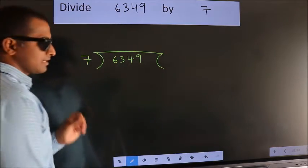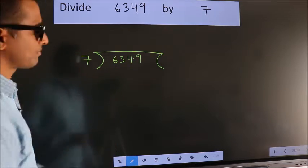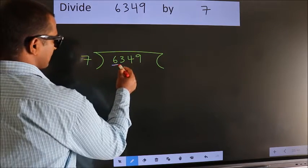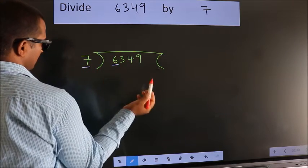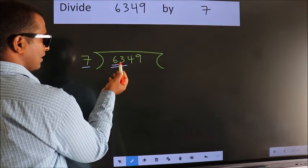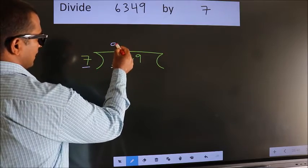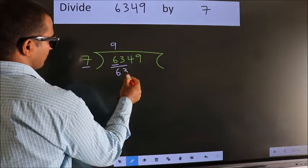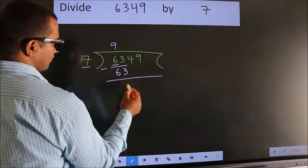This is your step 1. Next, here we have 6, here 7. 6 smaller than 7, so we should take two numbers, 63. When do we get 63? In 7 table, 7 nines 63. Now we should subtract. We get 0.